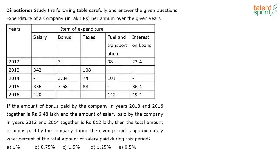Next question: if the amount of bonus paid by the company in years 2013 and 2016 together is Rs. 6.48 lakh, and the amount of salary paid by the company in the years 2012 and 2014 together is 612 lakhs, then the total amount of bonus paid by the company during the given period is approximately what percentage of the total salary paid during this period? So the amount of bonus paid in 2013 and 2016 together is 6.48 lakhs, and the 2012 and 2014 salary is given as 612.